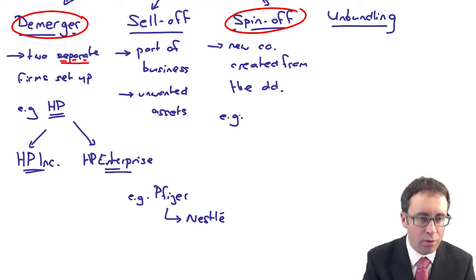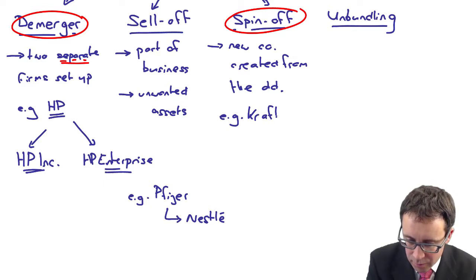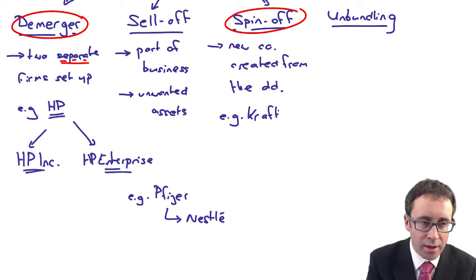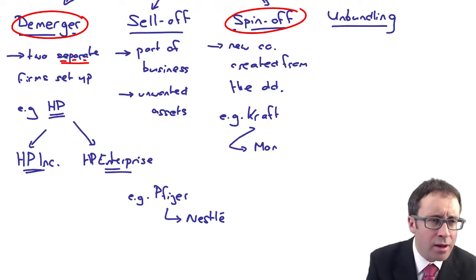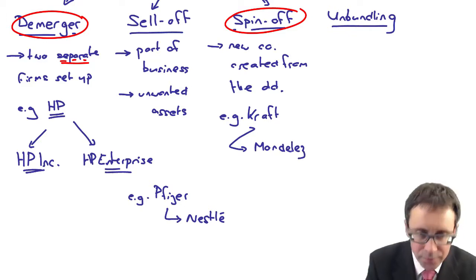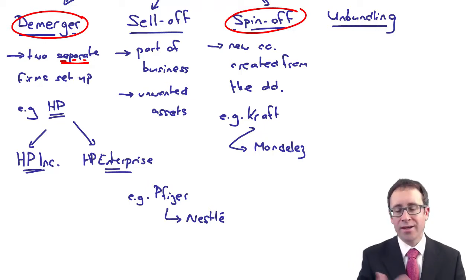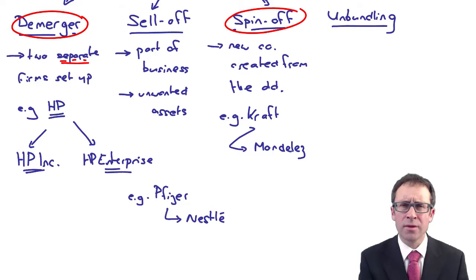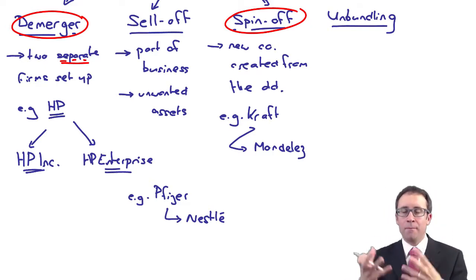Examples you could use would be Kraft, the US food company. They set up Mondelez, which if you're Spanish means delicious world. That was part of Kraft's business that was its global snack foods business - if you've heard of Oreos, if you've heard of Milka. Mondelez was spun off as a separate business.